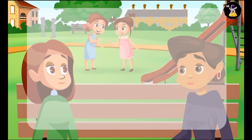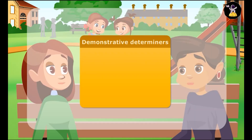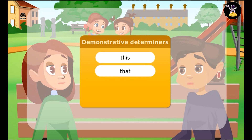There are only four demonstrative determiners in English: this, that, these, those.